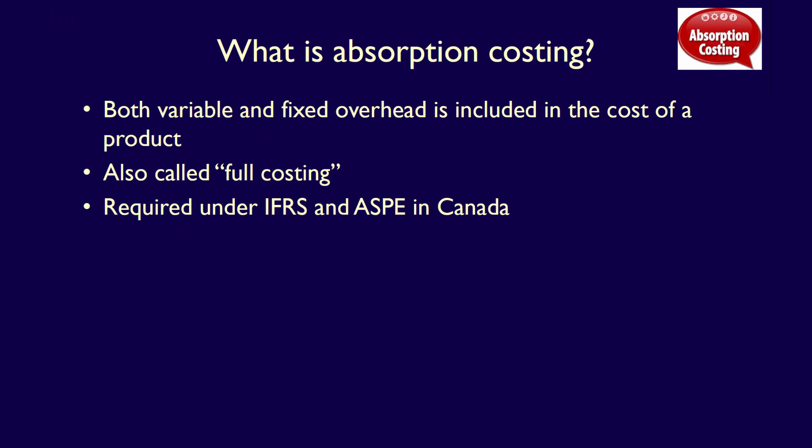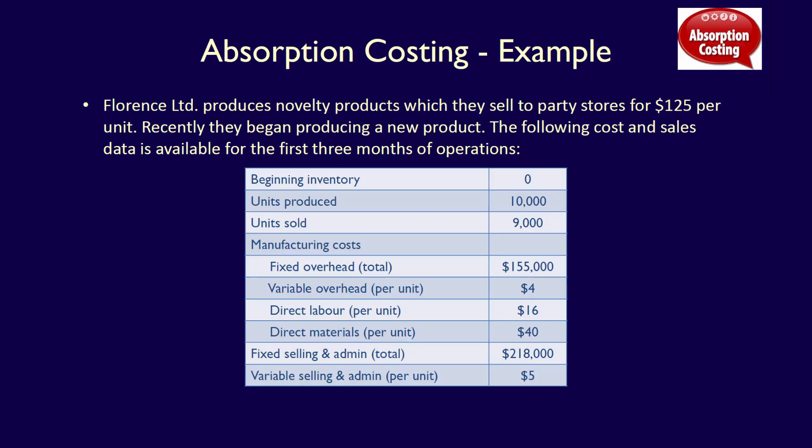To understand both costing methods, let's use an example and start by applying it to absorption costing — that's the easiest, since you've already seen absorption costing when we did job order costing. Our example is as follows: Florence Limited produces novelty products which they sell to party stores for $125 per unit. Recently, they began producing a new product. The following cost and sales data is available for the first three months of operations, January 1st through to March 31st.